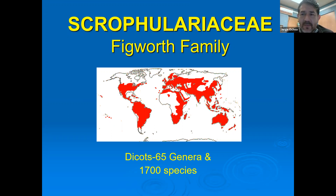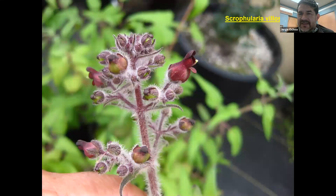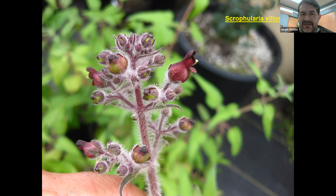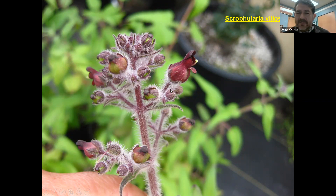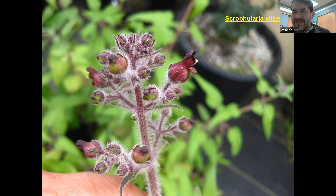The figwort family has about 65 genera — we'll look at the more common ones seen in the garden because many are used for ornamental purposes — and about 1700 species, making it a small family. Here is Scrophularia villosa as our type specimen to examine family characteristics. We see a cluster of flowers — an inflorescence. Villosa means covered with lots of fine hair, and you can see the flower clusters and stems are covered with hairs. Many members of this family are known as bee plants because the flower somehow resembles a tiny bee.